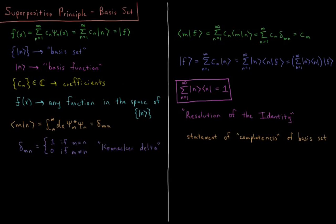In this video, we'll begin discussing the superposition principle, or the fact that any wave function can be written as a linear combination of eigenfunctions of the Hamiltonian. We start off with a function of x, representing any function of x as equal to a sum from n equals 1 to infinity of some coefficient c_n times psi_n of x, which we consider to be an eigenfunction of a Hamiltonian operator.